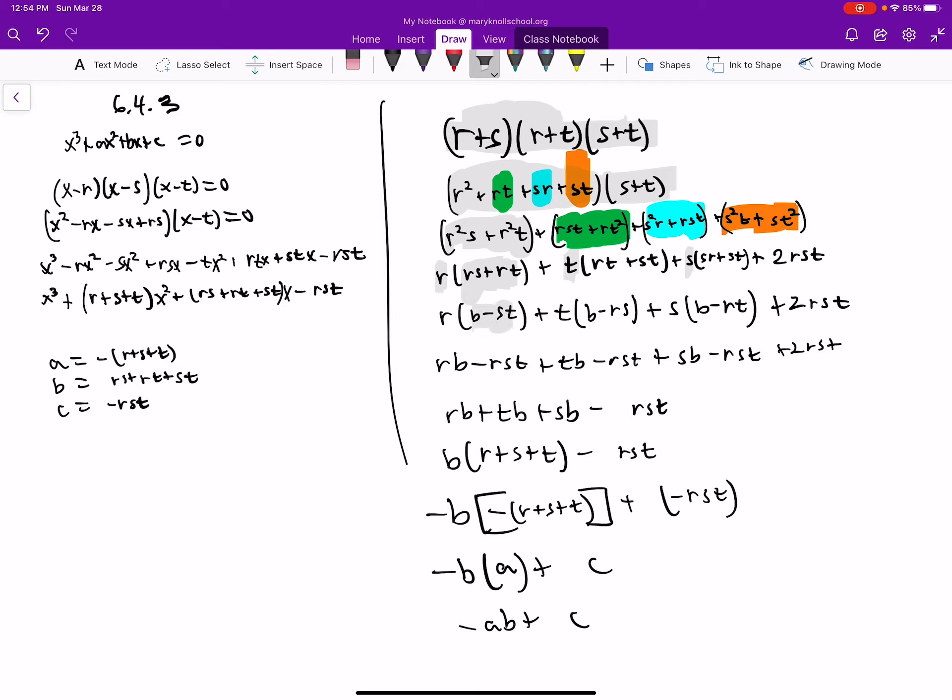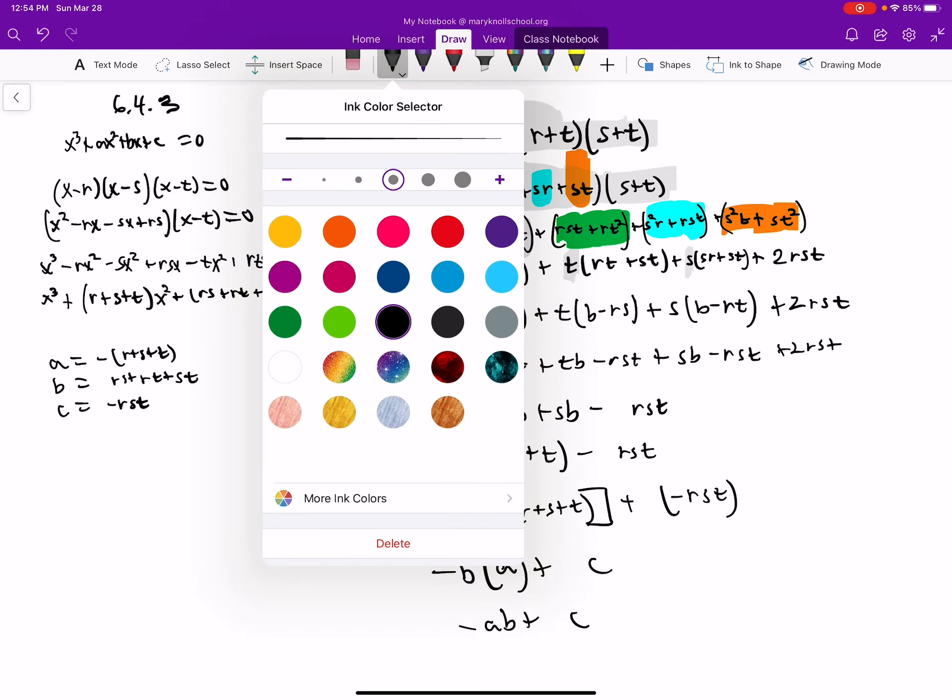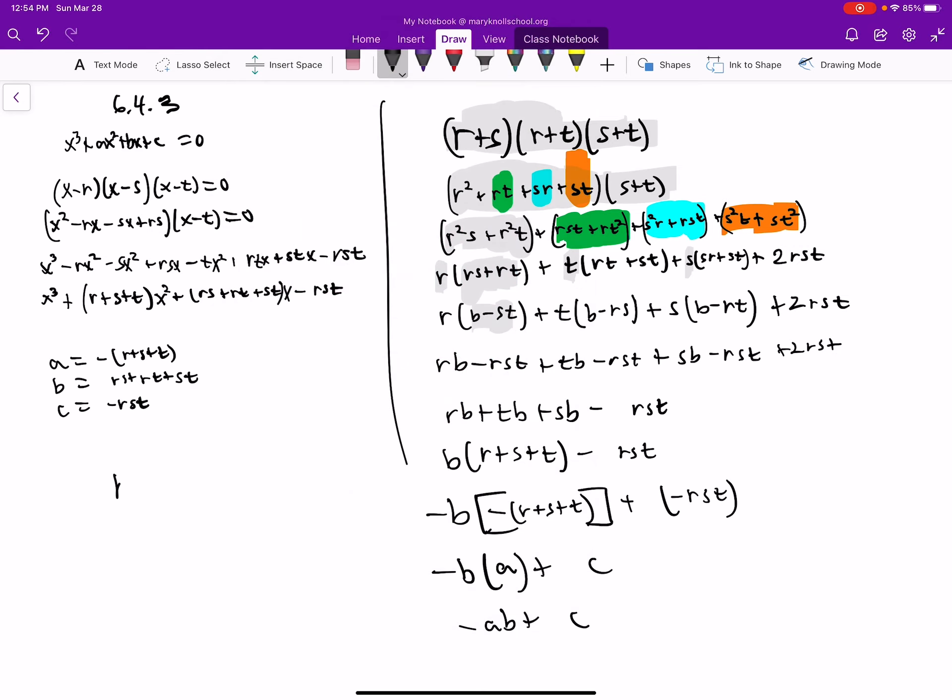If you look at this one, we want r*s plus r*t, right? So we have b equals r*s plus r*t plus s*t.